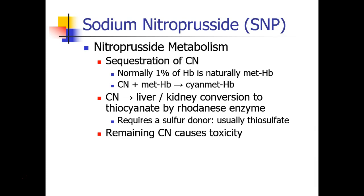Nitroprusside contains a lot of cyanide, which needs to be metabolized by your body. A small percentage of hemoglobin — about 1% — is always methemoglobin, and methemoglobin is a very good scavenger of cyanide, forming cyanomethemoglobin. The cyanide then goes to the liver and kidneys where it's converted to thiocyanate by an enzyme called rhodanese, which requires a sulfur donor — usually a thiosulfate molecule.